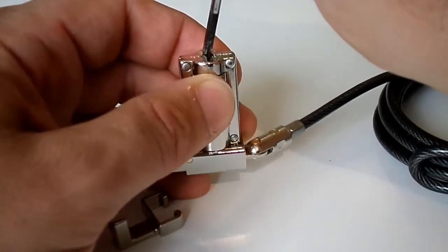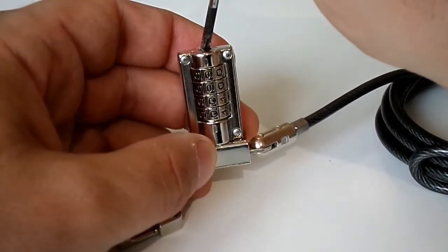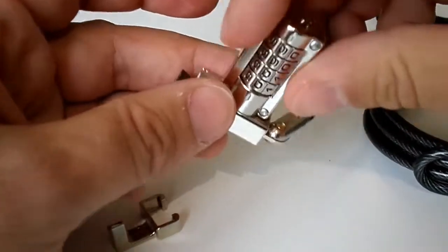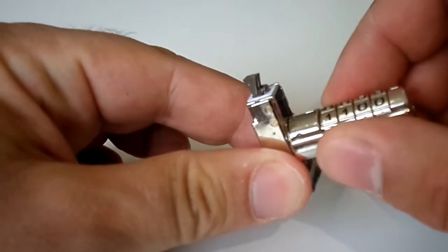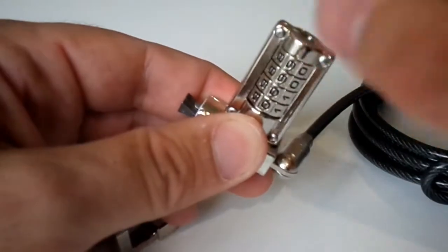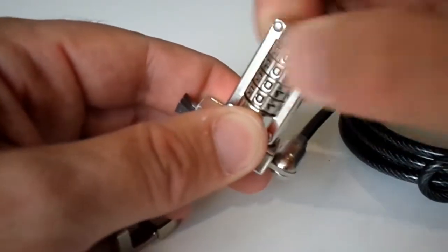There we go, so I've set it to 0099. Release, and we'll see that this is the new open position code, 0099. And let's turn it back to 0000 and it's not opening anymore.